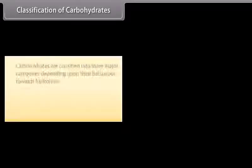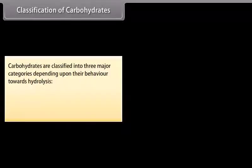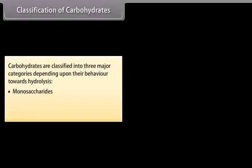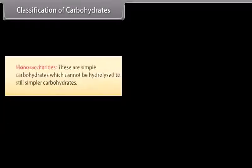Carbohydrates are classified into three major categories depending upon their behavior towards hydrolysis: Monosaccharides, Oligosaccharides, and Polysaccharides. Monosaccharides are simple carbohydrates which cannot be hydrolyzed to still simpler carbohydrates. For example, glucose and fructose.